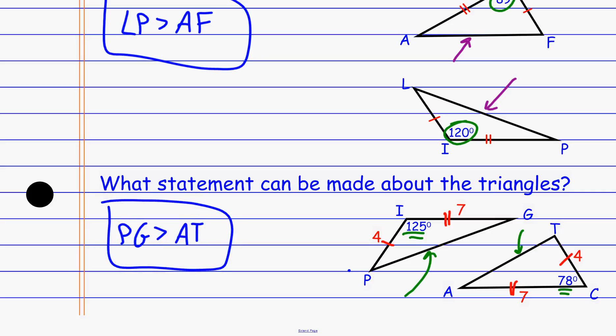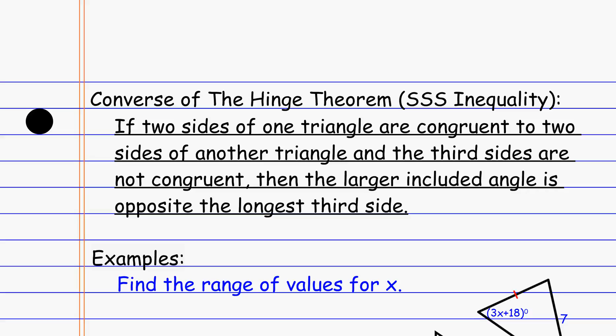That's the hinge theorem. It relies on the fact that we have two sides congruent, but the angle in between is not congruent. It kind of uses that side-angle-side relationship, except we're not talking about all three pieces being congruent — just the sides congruent but the angles different. We also have the converse of the hinge theorem, which is very similar, except now this is almost like a side-side-side inequality. If we're not talking about the angle in between, we're talking about two sides, and then we want to use the third side to tell us about the angle in between.